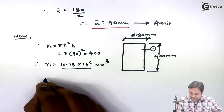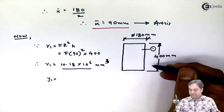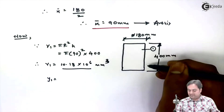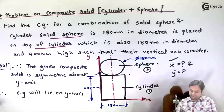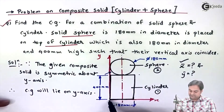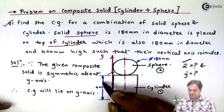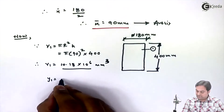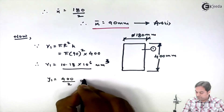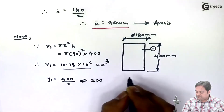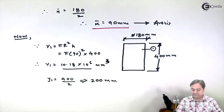After getting V1, we find Y1. For a cylinder, the CG lies at half the height. Since the cylinder is placed at the origin, Y1 = 400/2 = 200 mm. Y1 indicates the centroidal Y-coordinate for the first solid, which is the cylinder.